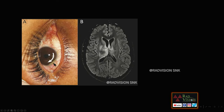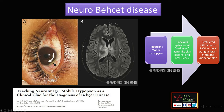Coming to the first case, here you can see the patient presented with mobile hypopyon. The patient also has skin ulcers and oral ulcers, and there is restricted diffusion on DWI noted in the basal ganglia. Whenever you see mobile hypopyon with restricted diffusion on DWI in the basal ganglia, you should definitely suspect Behçet's disease. This was a case of neuro-Behçet's disease.